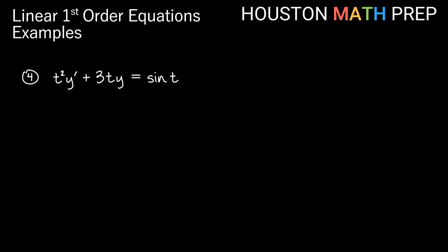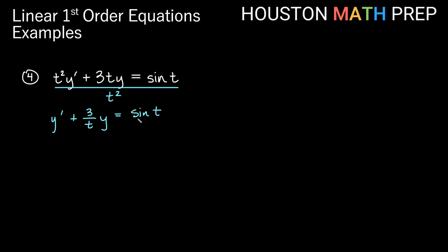For our last example, we have a function of t: t squared y prime plus 3ty equals sine of t, where y is a function of t and y prime is dy dt. This is not in normal form, so we divide by t squared to get y prime plus 3 over t times y equals sine of t over t squared. Looking at sine of t over t squared, you might think you can't integrate that — but remember, you still need your integrating factor, which may change the right side significantly.